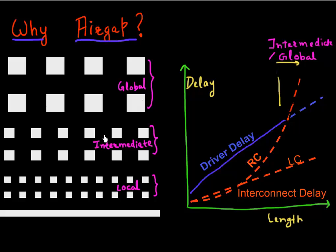So if you look at our back end of the line of any microprocessor, it has different levels of wiring. The lowest levels that connect the shortest distance are called local. Then you have intermediate interconnects, and then you have global wiring or global interconnects.